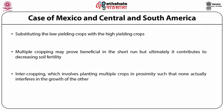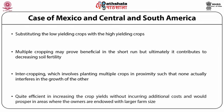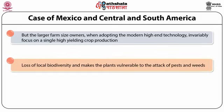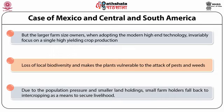Another cropping pattern is intercropping, which involves planting multiple crops in proximity such that none interferes with the growth of the others. This strategy could prove efficient in increasing crop yields without incurring additional cost and would prosper where owners are endowed with large farm size. However, most large farm owners adopting modern high-end agriculture technology invariably focus on a single high-yielding crop, causing loss of local biodiversity and making plants vulnerable to pests and weeds. Due to population pressure and small land holdings, small farm holders fall back to intercropping as a means to secure livelihood.